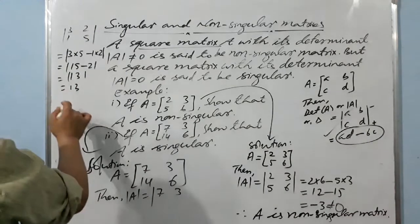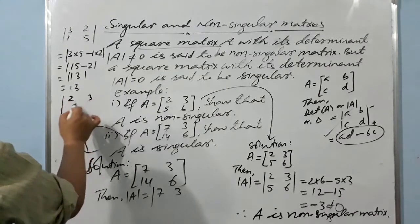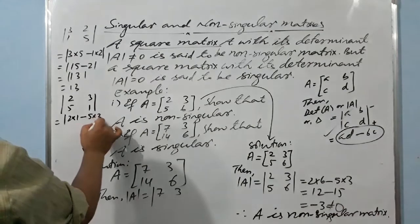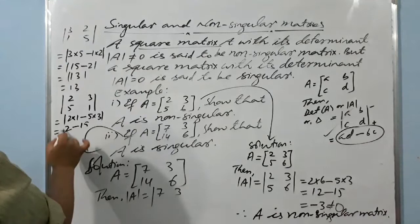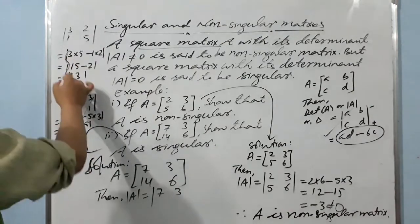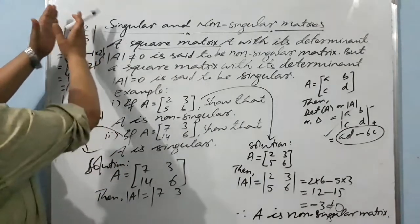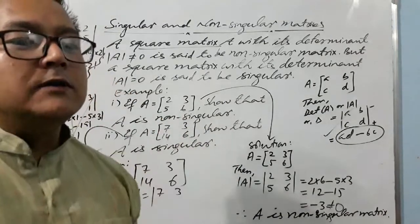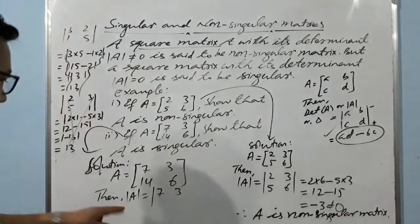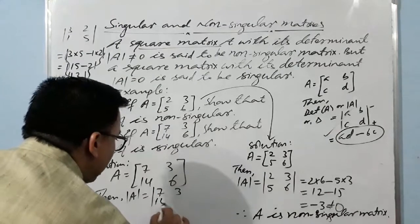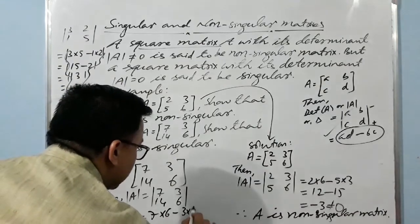So as I have written, you will find the determinant of the square matrix of order 2 exactly in this form. For the second example, A = [7, 3; 14, 6]. Let's find out: 7 into 6 minus 3 into 14, which is 42 minus 42, equals zero. The determinant of the square matrix is zero.